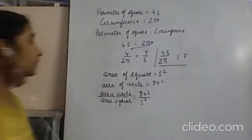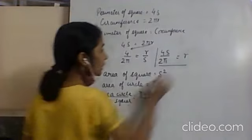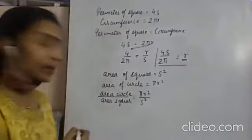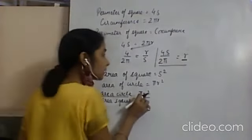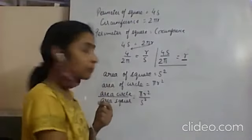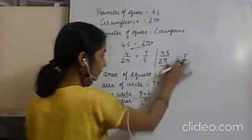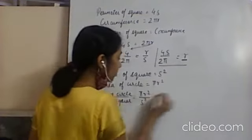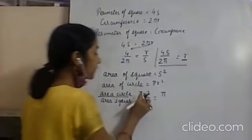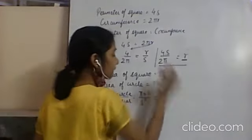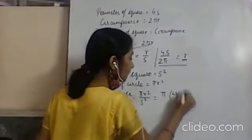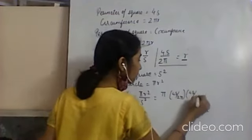Now I substitute r equals 4s upon 2π in place of r. So: π times (4s upon 2π) times (4s upon 2π) upon s². I put this value in place of r squared.